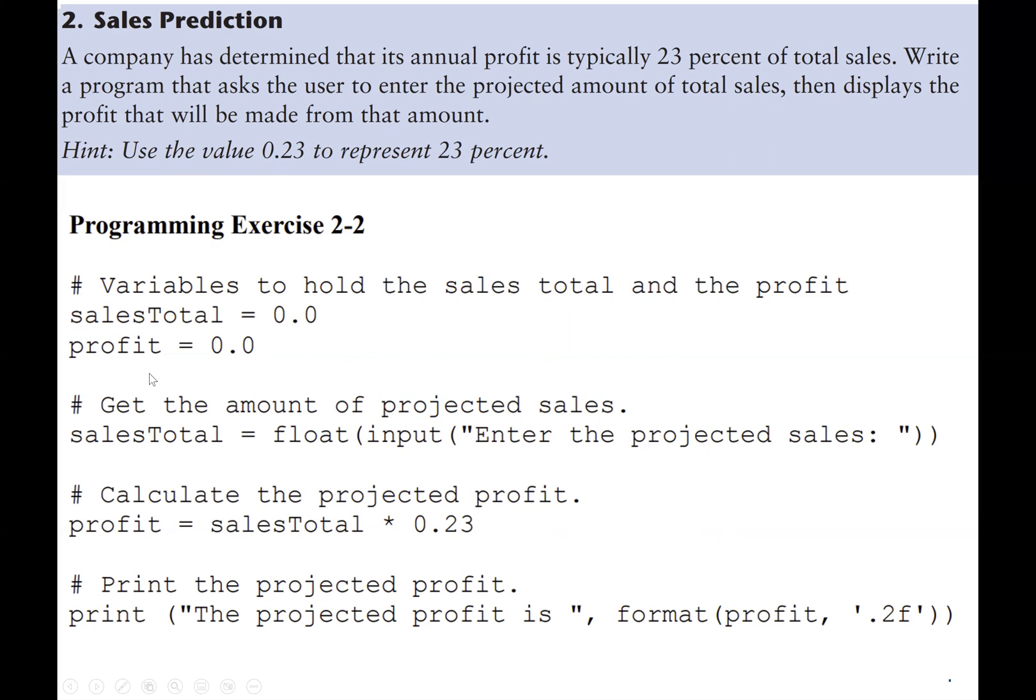So here we have a variable, and here we need two inputs, which would be the total sales and also the profit that the company will make based on the total sales that the user will enter.